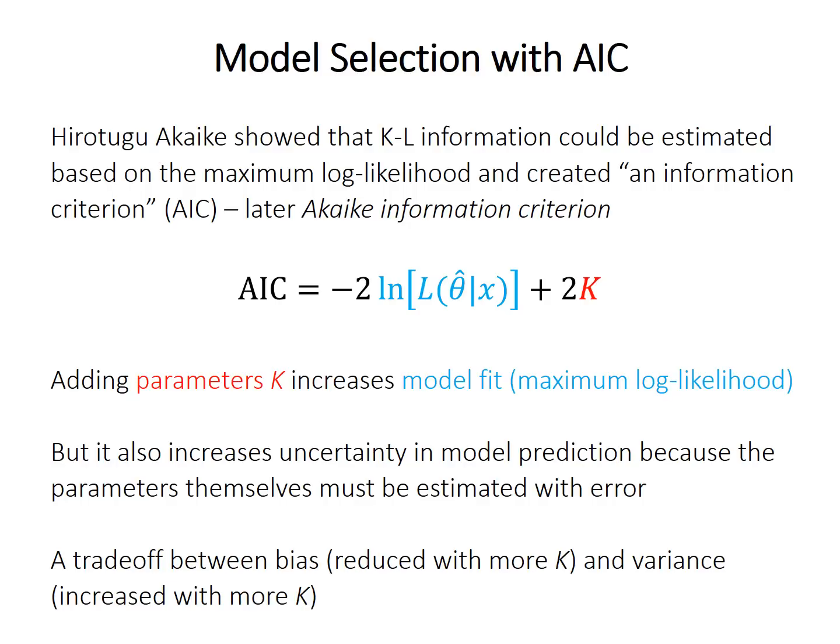So basically AIC is a tradeoff between bias. So like, is the model biased towards being lower or higher? So bias is reduced when you have more parameters as the model should be a better fit. So that's a tradeoff between bias and variance or uncertainty. Variance is increased with more parameters because there's more sources of uncertainty to fit more variables as you're doing your model.